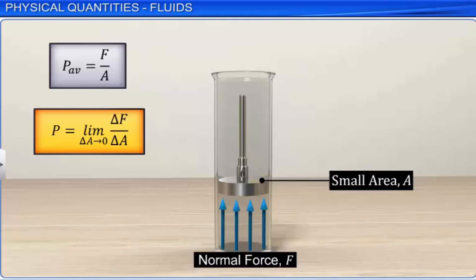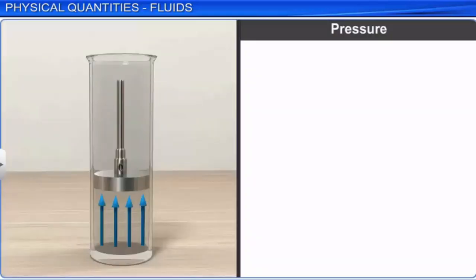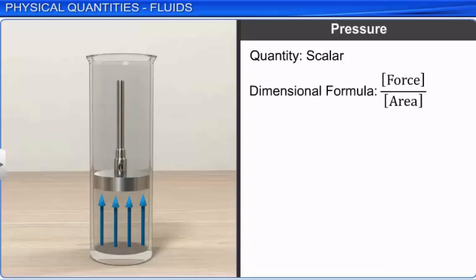The dimensional formula of pressure is the ratio of the dimensional formula of force to that of area. The dimensional formula of force is MLT⁻², and the dimensional formula of area is L². Hence, the dimensional formula of pressure is ML⁻¹T⁻². The SI unit of pressure is N/m², also referred to as Pascal or Pa. Pressure is commonly expressed in atmosphere, symbolically written as atm.